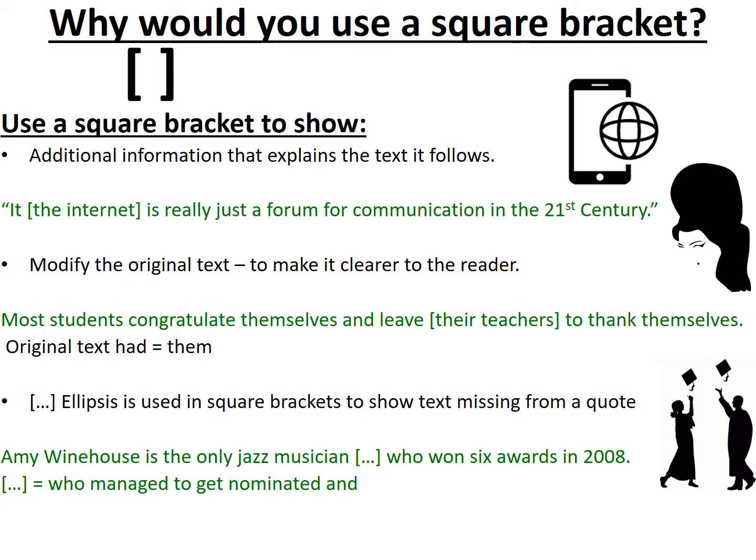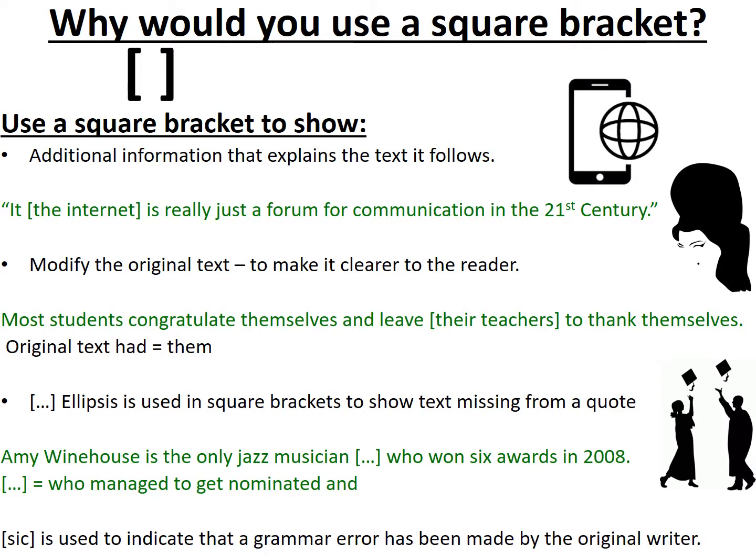What's important to note is that the statement makes sense when I include the square brackets and the ellipsis, and if I take them away, it's still clear to you exactly what is meant. Finally — this is a strange one, but worthy of note — when it says [sic] in square brackets, that is used to indicate that a grammar error has been made by the original writer or speaker.